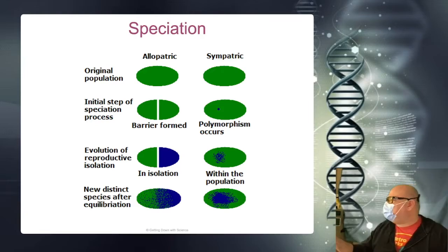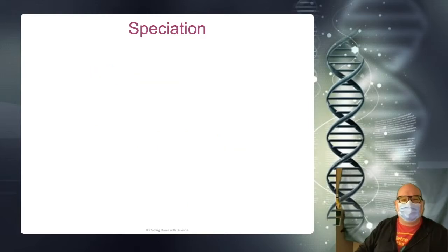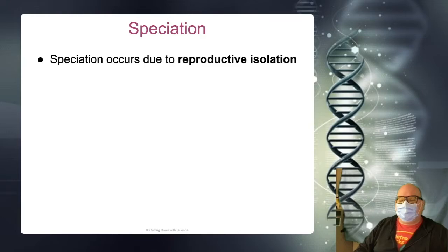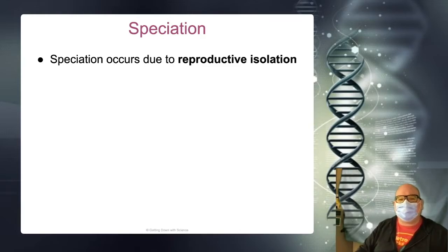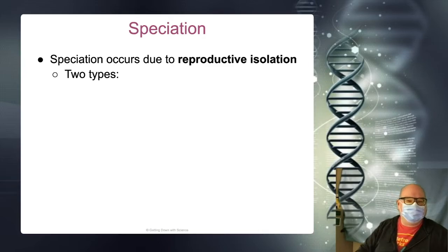And if you put them back together, you will not see interbreeding. Everybody understand this? Speciation happens due to reproductive isolation, and that can happen through a couple of ways.